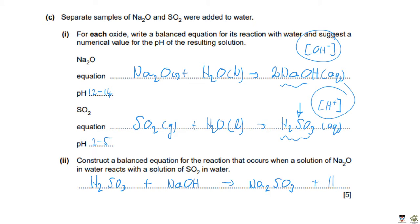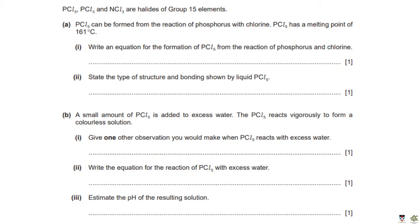The balanced equation is: H₂SO₃ + 2NaOH → Na₂SO₃ + H₂O. Make sure to put 2 in front of NaOH.